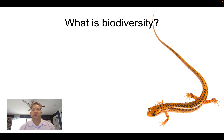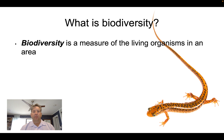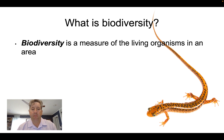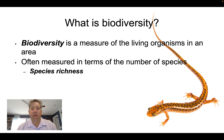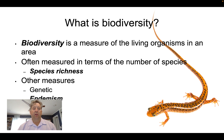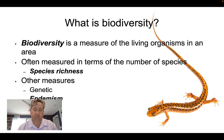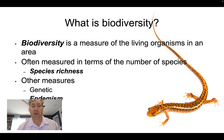We'll start with the definition of biodiversity. Biodiversity is a measure of the living organisms found in an area. It's often measured in what's called species richness, which is the number of species found in a given area. You can also include other measures like genetic diversity as well as endemism, which we'll talk about later in the lecture.